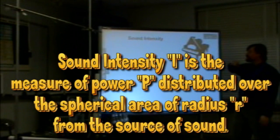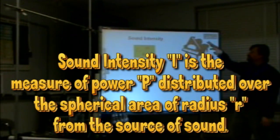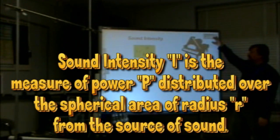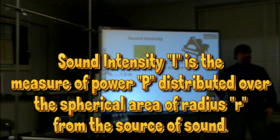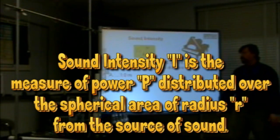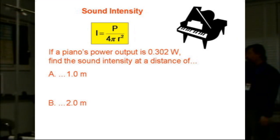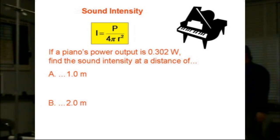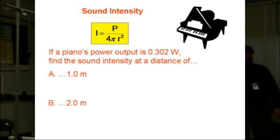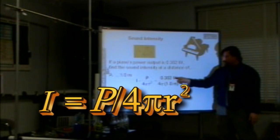Sound intensity — here we go. P is power and R is our distance from the sound source. If a piano's power output is 0.302 watts, find the sound intensity at a distance of one meter. We just plug in power.